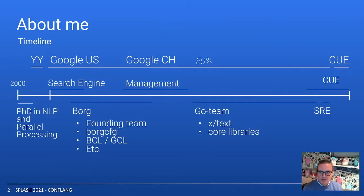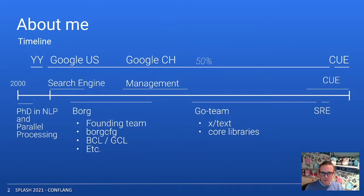A bit about me. After finishing my PhD in parallel natural language parsing, I joined an NLP startup called YY. The things I learned there were quite influential for how I approached configuration later at Google. I started on the search quality team, which was responsible for search ranking. Due to some work I did there, I ended up on the founding team of Borg. As you may know, Borg later inspired the development of Kubernetes. On the Borg team, I was responsible for the creation of BCL and GCL configuration languages, and also Borg config, which is the orchestration tooling around Borg.